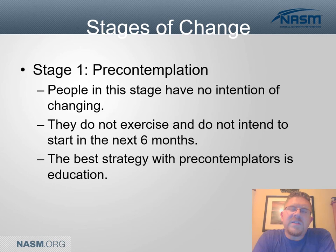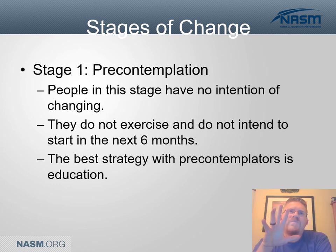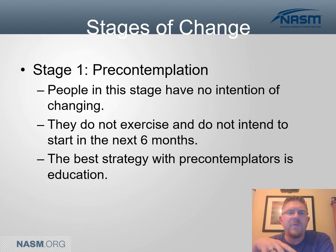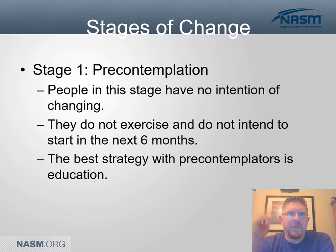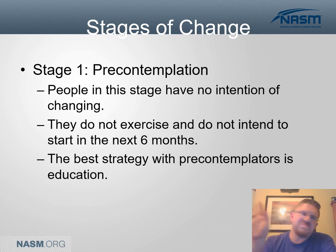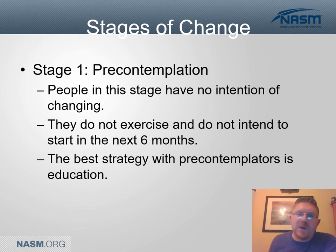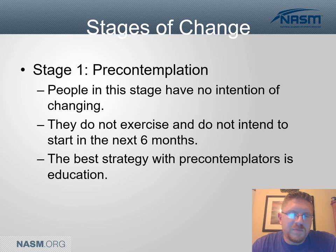The Stages of Change model: people can cycle through five stages. The first is pre-contemplation — these are people that don't exercise and have no desire to start within the next six months. 'Fat, dumb, and happy' — not interested, doesn't fit my lifestyle. The best strategy if you talk to anyone in stage one is education. You don't want to badger anybody because then they get annoyed and you drive them further away, but sometimes hearing something from a fresh perspective can help them come around.